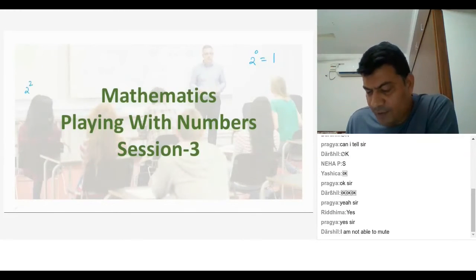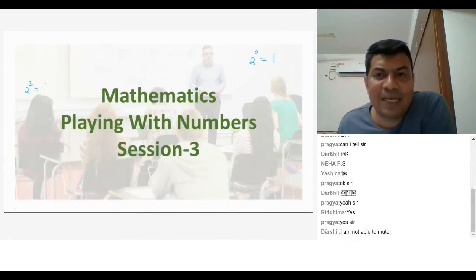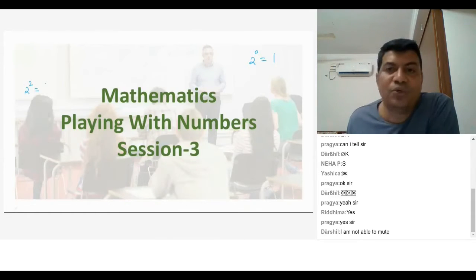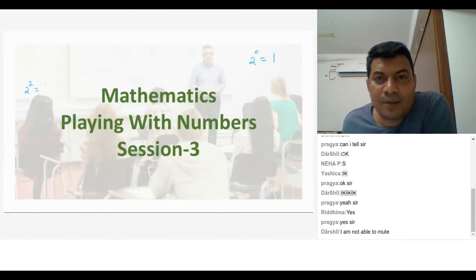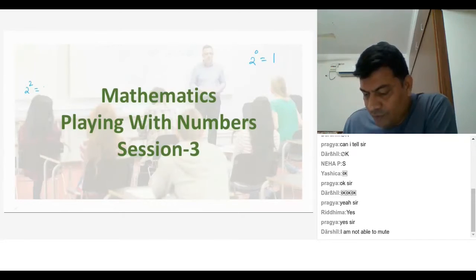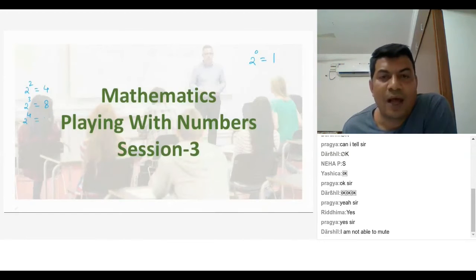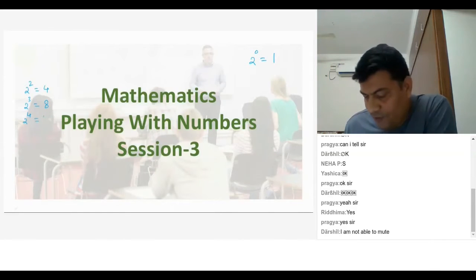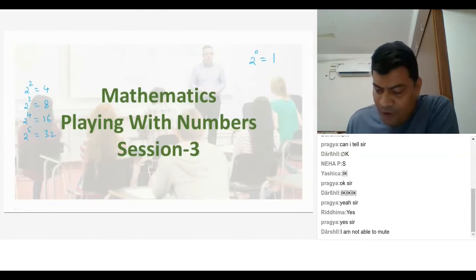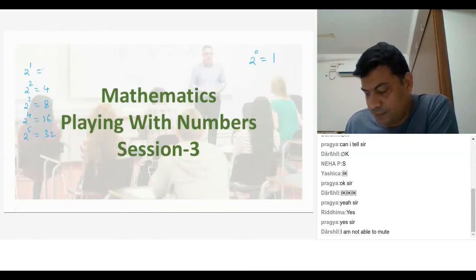What is 2 square? Yashika, do the mathematics and tell me what is 2 square. 2 square is 2 into 2, right? 4, sir. Very good. What is 2 cube? Very good. What is 2 to the power of 4? 16. Very good. What is 2 to the power of 5? 32. Very good.